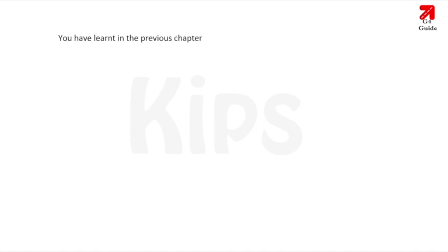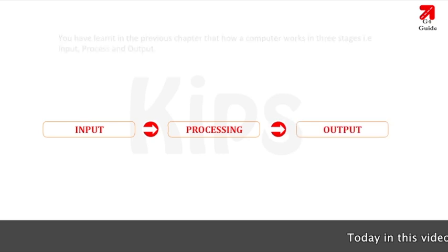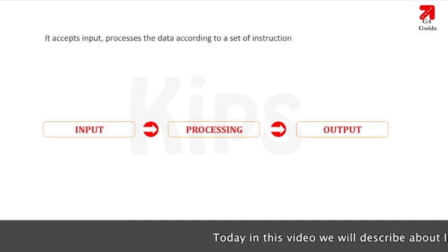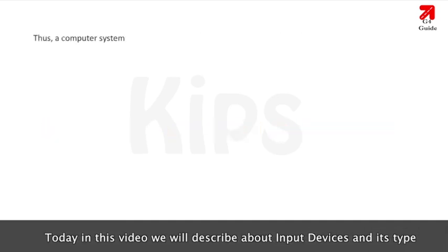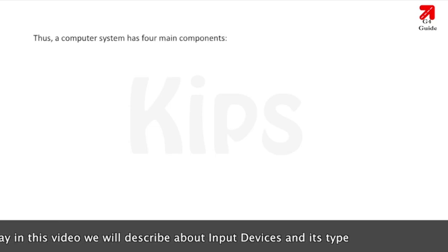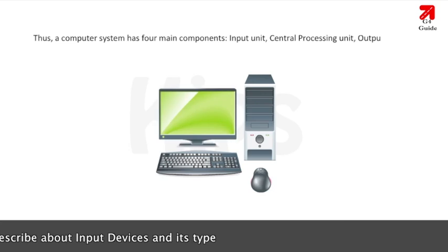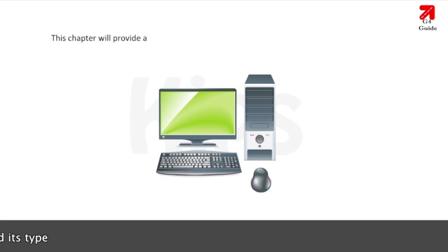You have learnt in the previous chapter that a computer works in three stages: input, process and output. It accepts input, processes the data according to a set of instructions, then stores it and gives meaningful output. Thus, a computer system has four main components: input unit, central processing unit, output unit and secondary storage unit. This chapter will provide a functional overview of the input, output and storage unit of a computer system.